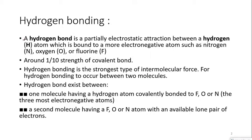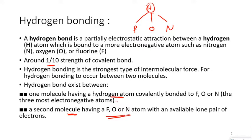First, what is a hydrogen bond? A hydrogen bond is a special type of electrostatic attraction. It happens between a hydrogen atom of one molecule and fluorine, oxygen, or nitrogen of another atom. Hydrogen bonds exist where one molecule has a hydrogen atom covalently bonded to fluorine, oxygen, or nitrogen, and a second molecule has fluorine, oxygen, or nitrogen atoms with available lone pairs of electrons.